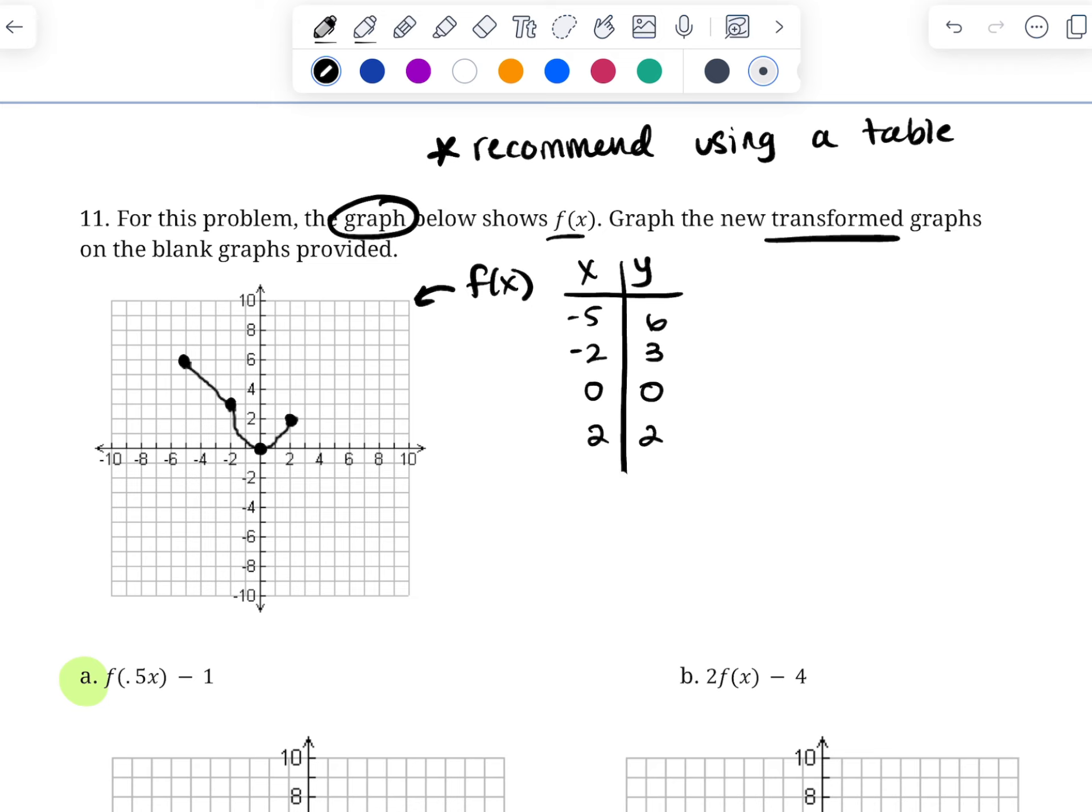And then I'm going to look at letter A, and I'm going to recognize that this interior 0.5 means that I'm going to dilate x by factor of 2. So what that means is when I create my new table of values for letter A, I'm going to take all the x values and I'm going to multiply them by 2. So that's what that dilation means. So 2 times x. So that means negative 5 is going to turn into negative 10. Negative 2 is going to turn into negative 4. 0 isn't going to change. And 2 is going to turn into 4.